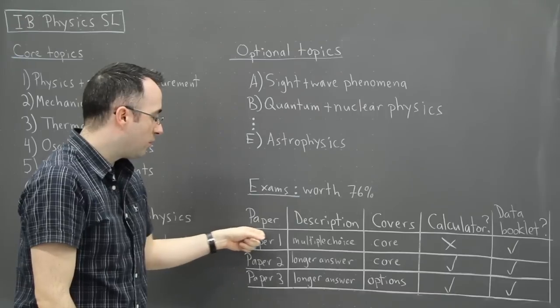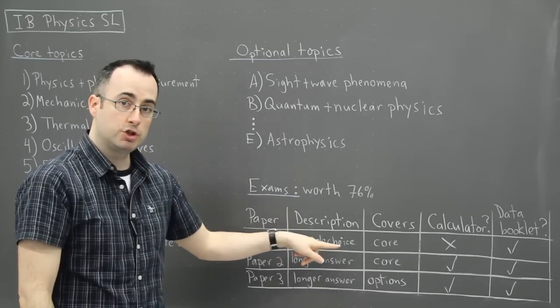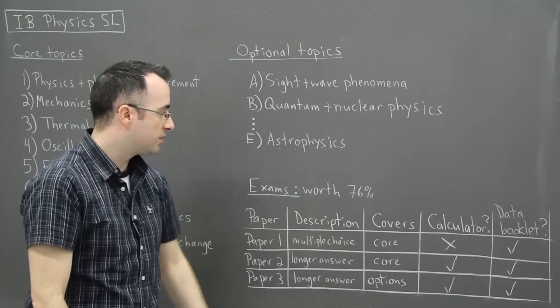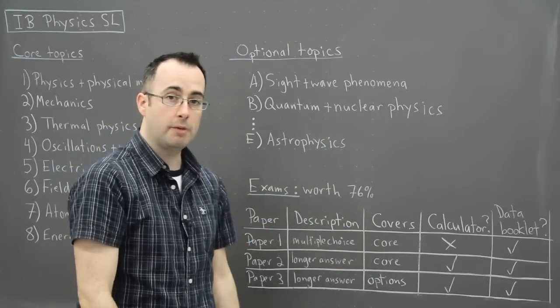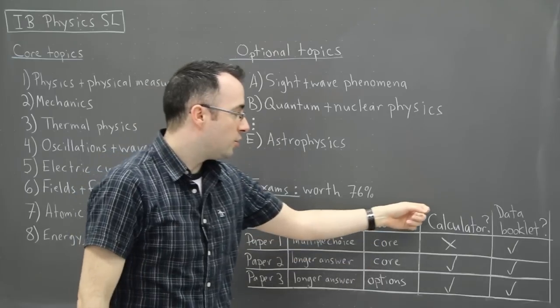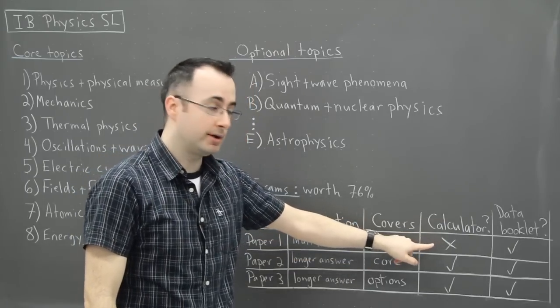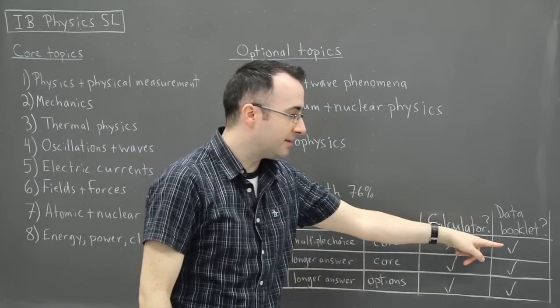So if you do your exams, paper one, it's multiple choice. There's actually 30 multiple choice questions. It covers the core topics. So those are those eight. And you are not allowed a calculator for it. But you are allowed a data booklet. In other words, all the equations.